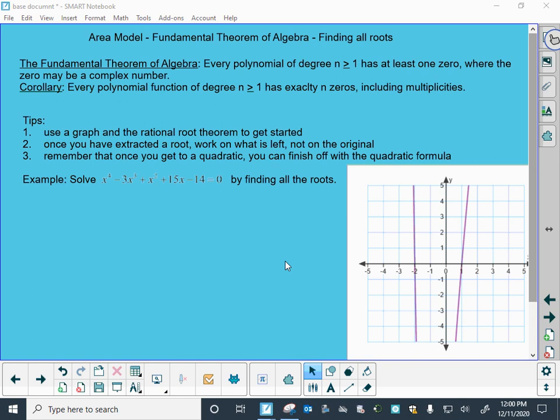And this is what the fundamental theorem of algebra says. It says that every polynomial of degree greater than or equal to 1 has at least one zero, where the zero may be a complex number.